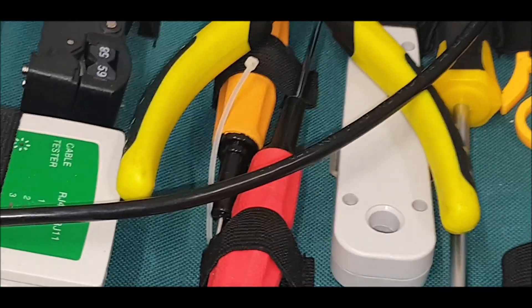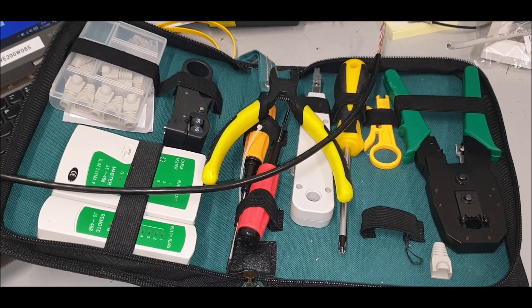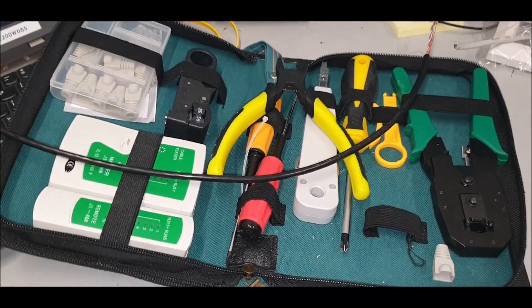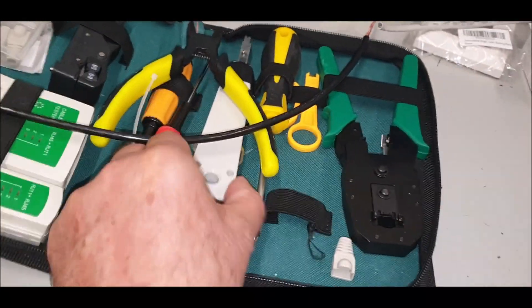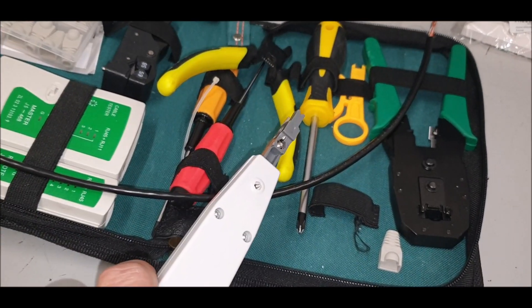This is the toolkit. It comes complete with everything. What we're looking for now is the punch down tool, which is this. You've probably seen BT engineers using these.